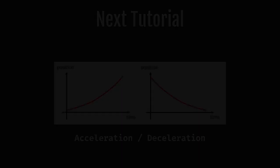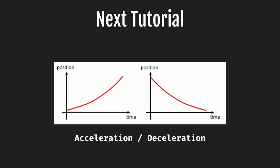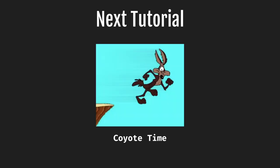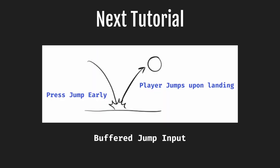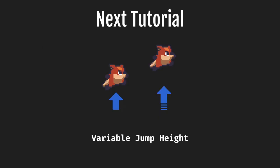In the next tutorial, we'll be adding acceleration and deceleration to our movement, plus coyote time, buffer jumping, and variable jump heights to our jump. I hope you liked this video — see you next time.